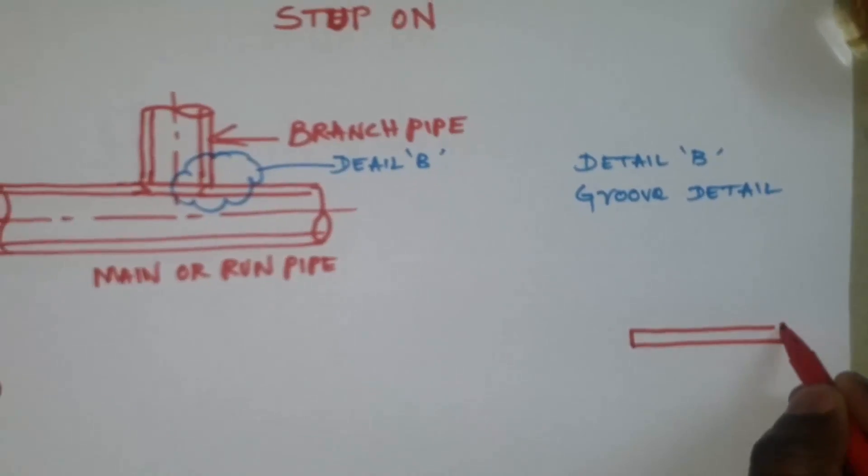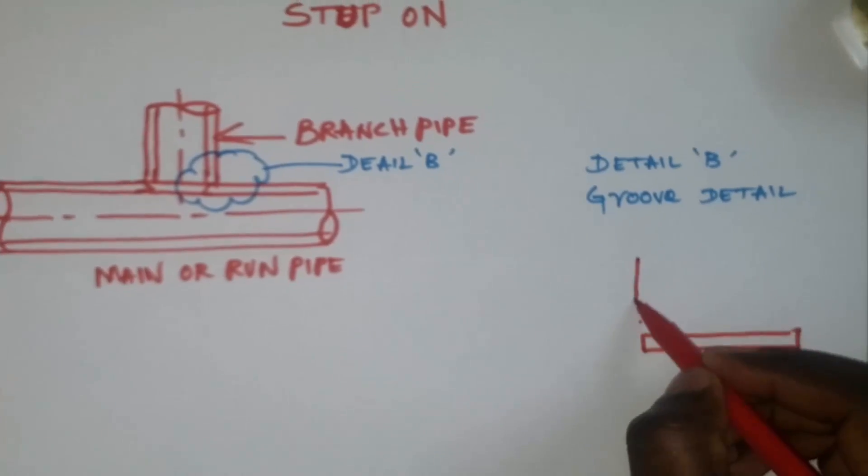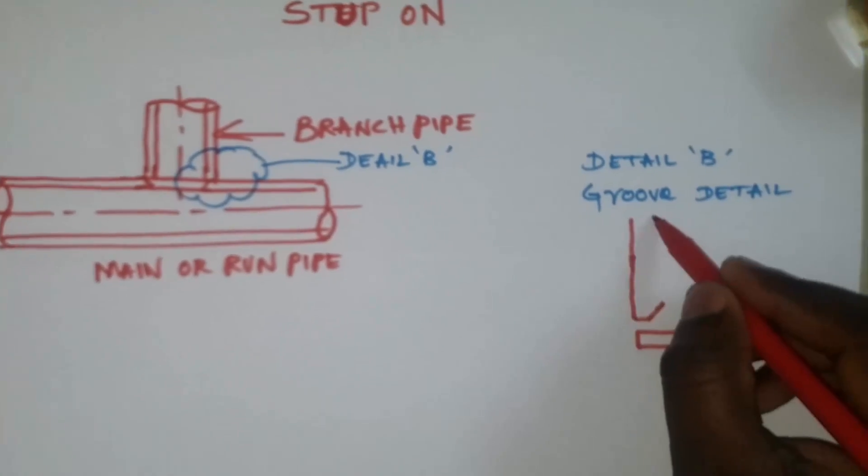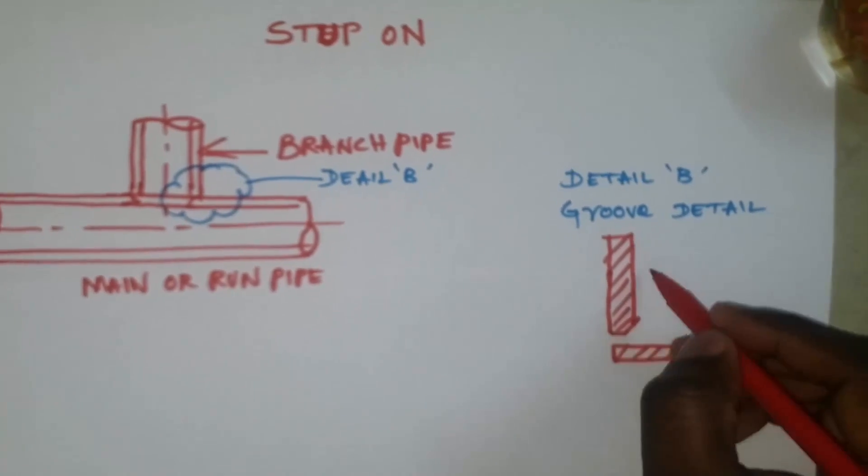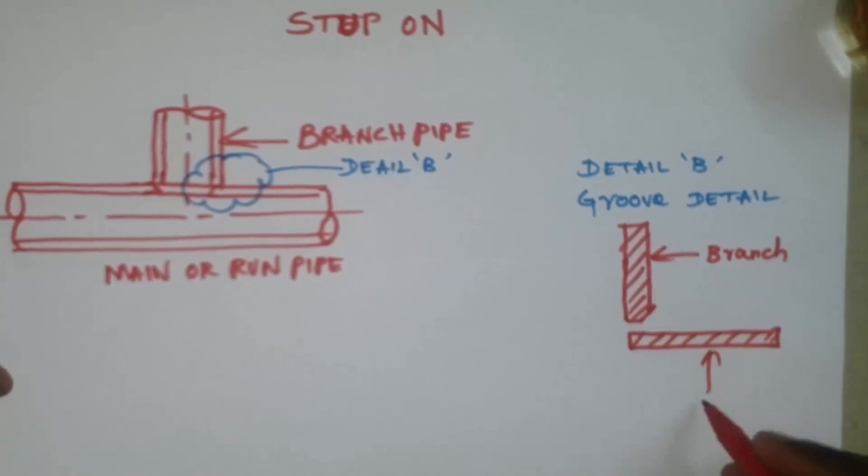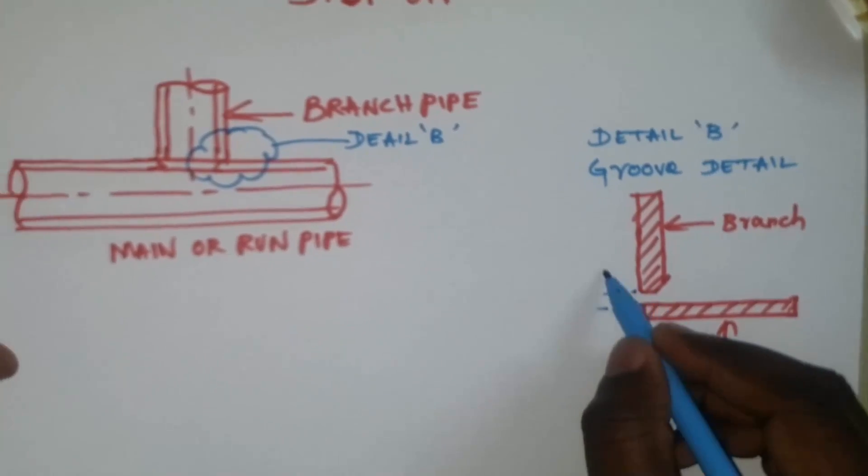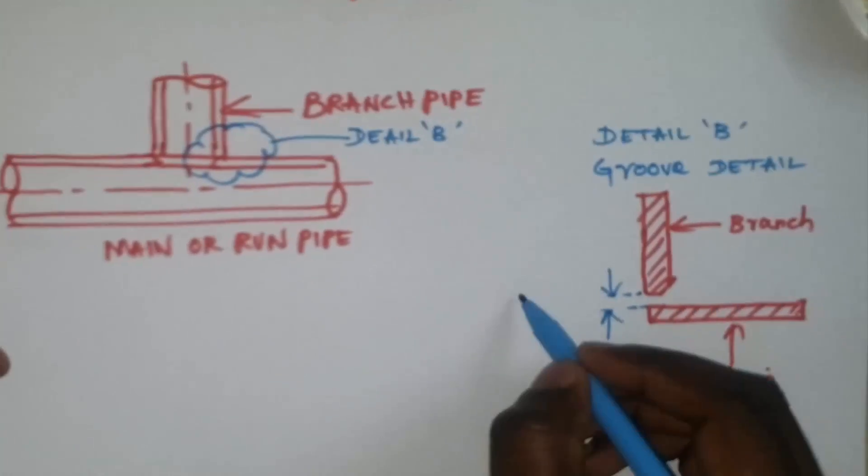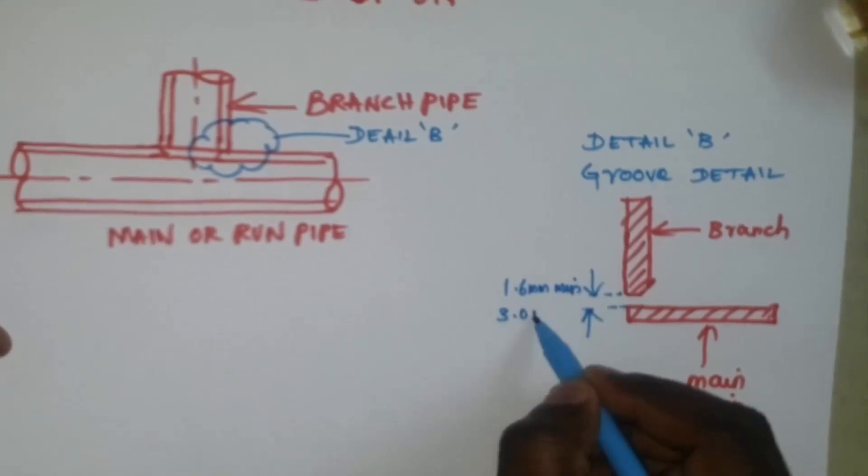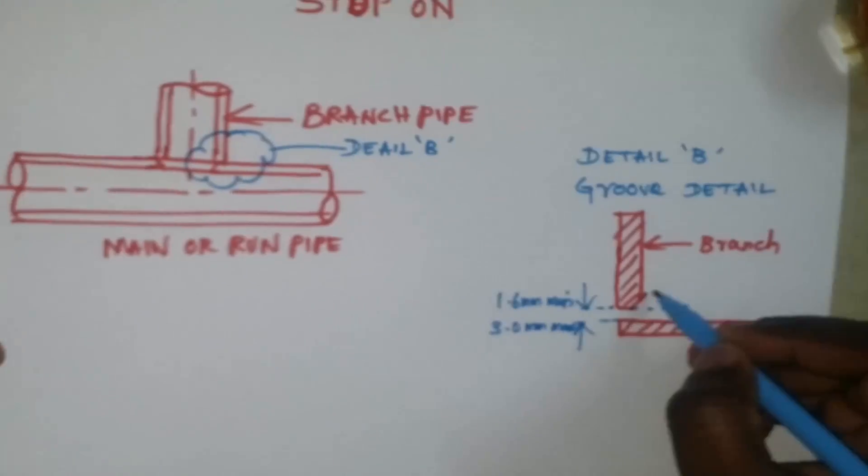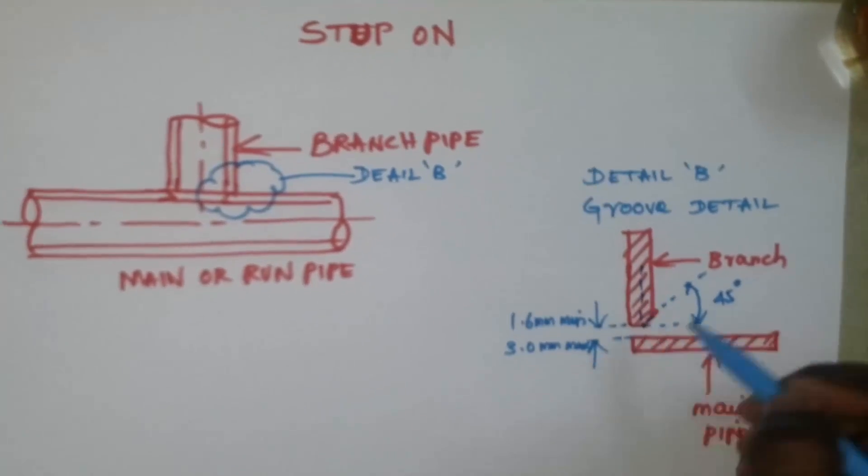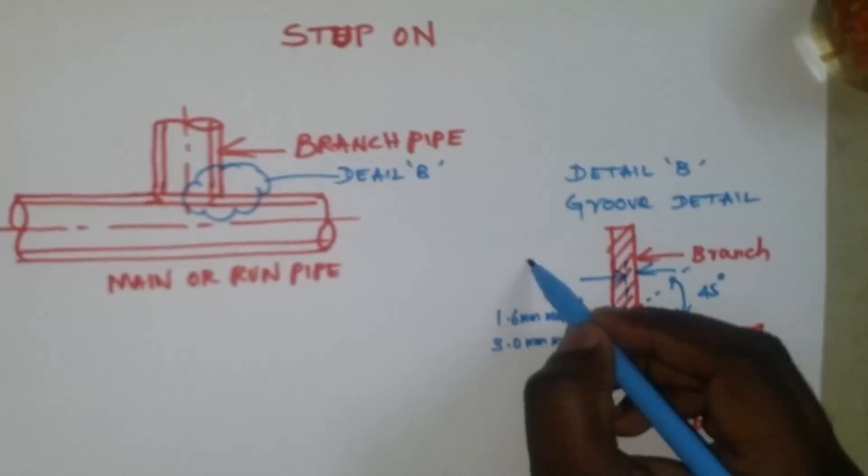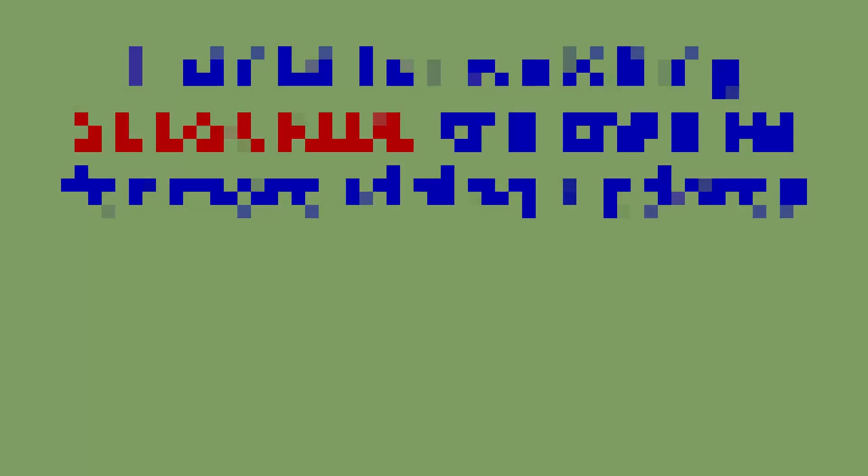Let's see the stub on pipe branch connection fit up and welding acceptable measurement details.